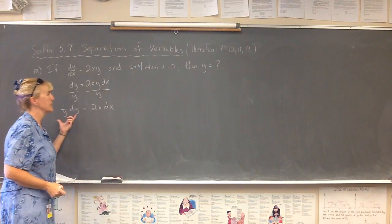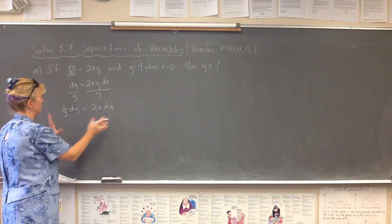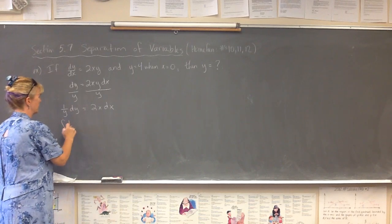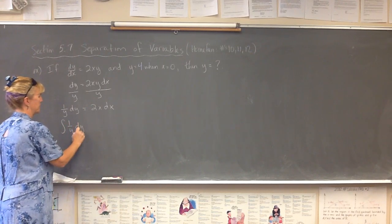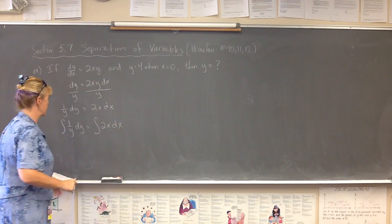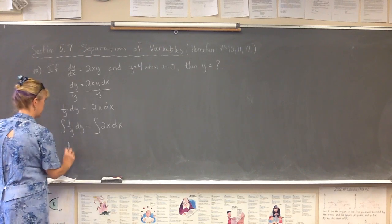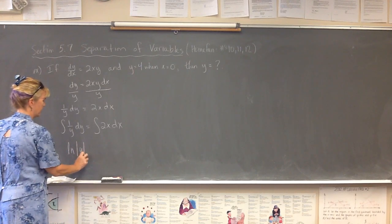And now I can integrate this, I can integrate this. So I'm going to integrate each side of the equation individually. So I'm just going to write the integral of 1 over y dy is equal to the integral of 2x dx. And we should all know that the integral of 1 over y dy is the natural log of the absolute value of y.